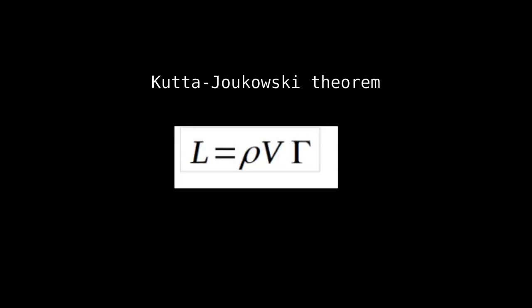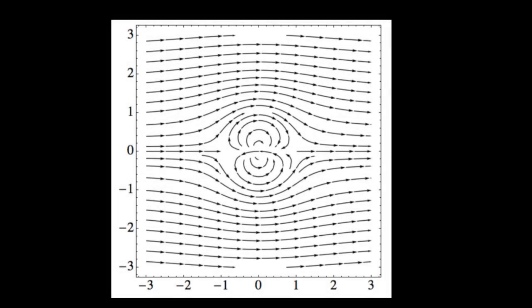This forms the Kutta-Joukowsky theorem. Here, the lift force equals rho times velocity times gamma. Therefore, having zero circulation means no lift.